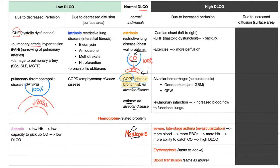Next, pulmonary arterial hypertension — the pulmonary artery is narrowed, so it has less blood, less red blood cells, less hemoglobin, and catches less CO. Additionally, in pulmonary arterial hypertension, you get thickening of the arterial wall, which further reduces DLCO. This can also be caused by damage to the pulmonary artery from systemic sclerosis — formerly known as scleroderma — which is extremely important for your exam. Scleroderma causes pulmonary artery hypertension and pulmonary artery damage.